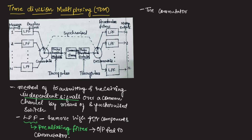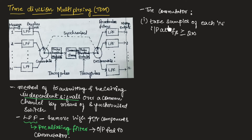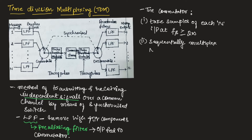The commutator has the following functions. First, it takes samples of each of the n inputs at a rate Fs ≥ 2W, where W represents the highest frequency component in the signal. This is the condition for sampling the signal. Next, it sequentially multiplexes these n samples with sampling interval Ts = 1/Fs.